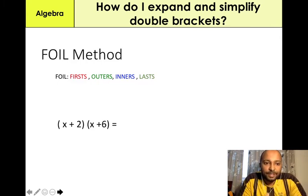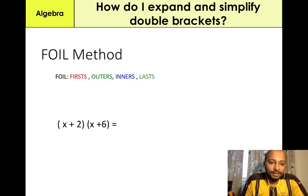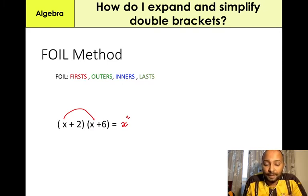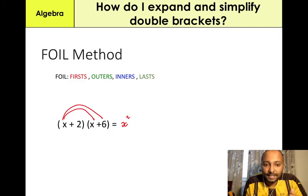With the FOIL method, we're going to start off with the First — basically multiplying the two X's together. So it'll be X times X, which gives us X squared. That's what First stands for. Now the Outer is multiplying the first X with the last number inside the second bracket, which is X times 6, which gives us 6X.